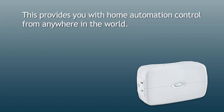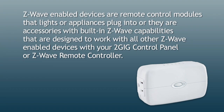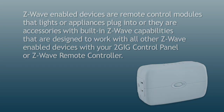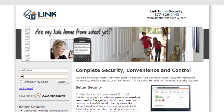This provides you with home automation control from anywhere in the world. Z-Wave-enabled devices are remote control modules that lights or appliances plug into, or they are accessories with built-in Z-Wave capabilities that are designed to work with all other Z-Wave-enabled devices with your 2GB control panel or Z-Wave remote controller.